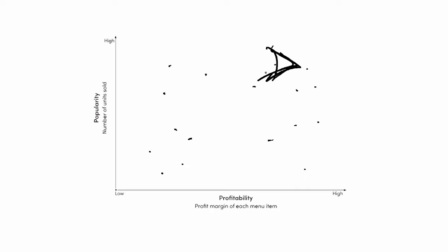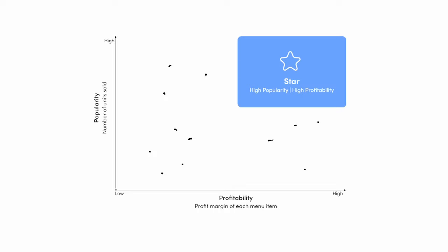Let's start with the top quadrant. Up here where we put our burger — draw a nice big star. These are the menu items that we are not going to change. They're popular, they are profitable, and people clearly love them. Keep those exactly as they are. Those are your heroes, your stars.